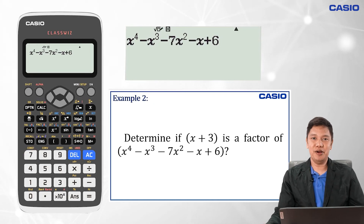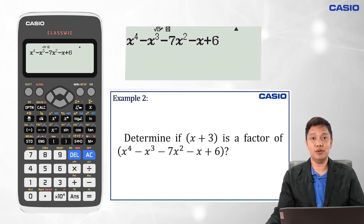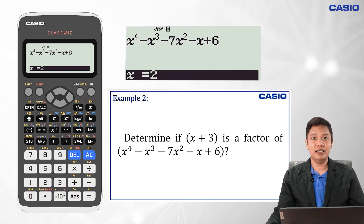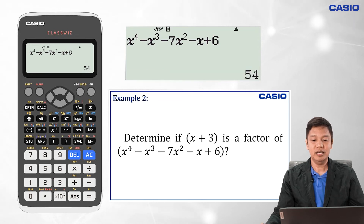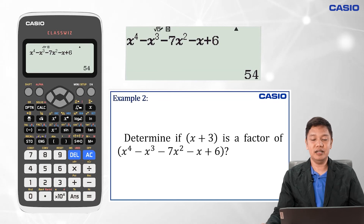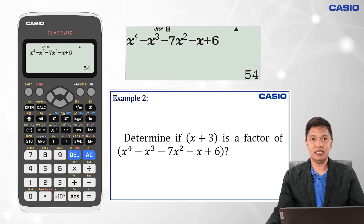Using the Remainder Theorem, we evaluate the polynomial at x equal to negative 3. We press Calculate, enter negative 3 for x, press Equals, and another Equals gives us 54. Thus the remainder is 54. Therefore, x plus 3 is not a factor of the polynomial x to the fourth minus x cubed minus 7x squared minus x plus 6.